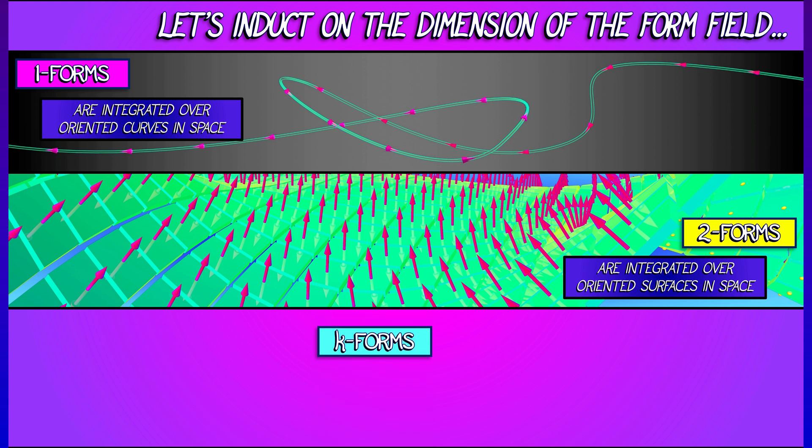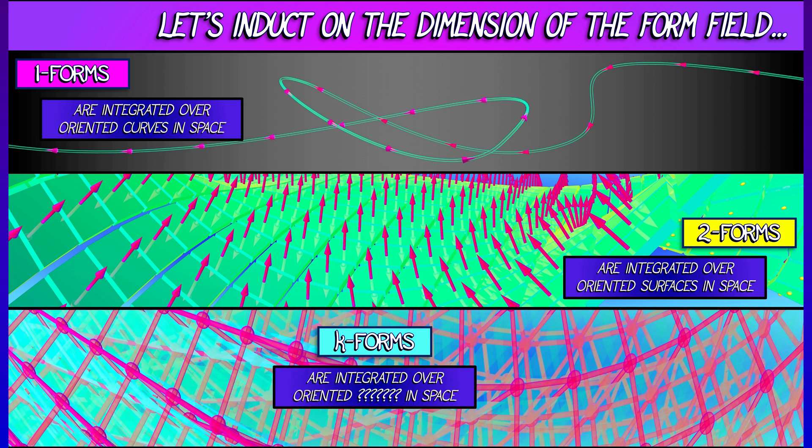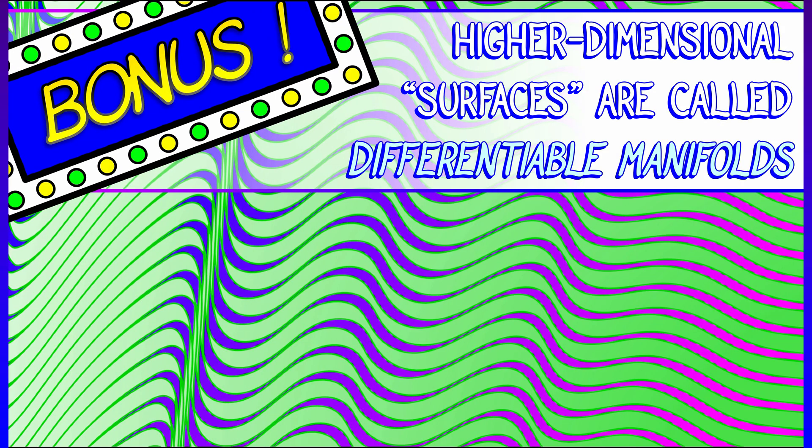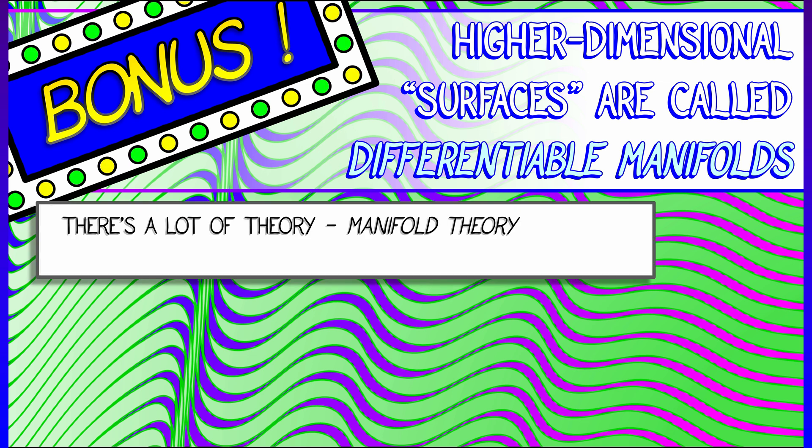A k-form needs to eat k-vectors. So what's the analog? What is an oriented k-dimensional thing in space? Well, it's bonus time. That's what it is. These higher-dimensional surfaces are things that are called differentiable manifolds.